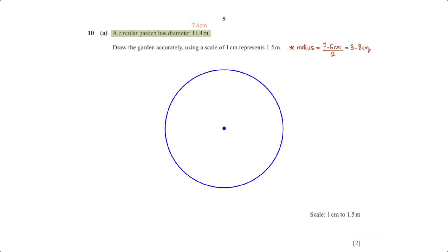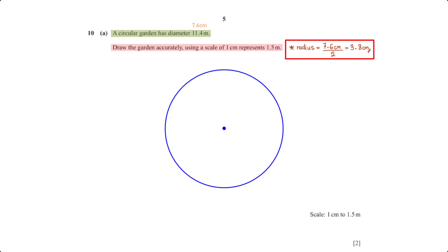A circular garden has diameter 11.4 metres. Draw the garden accurately using a scale of 1 cm represents 1.5 metres. Using the scale, 11.4 metres maps to 7.6 centimetres. To draw the circular garden we need its radius: 7.6 ÷ 2 = 3.8 centimetres. So we set the compass width to 3.8 cm and construct the circle.